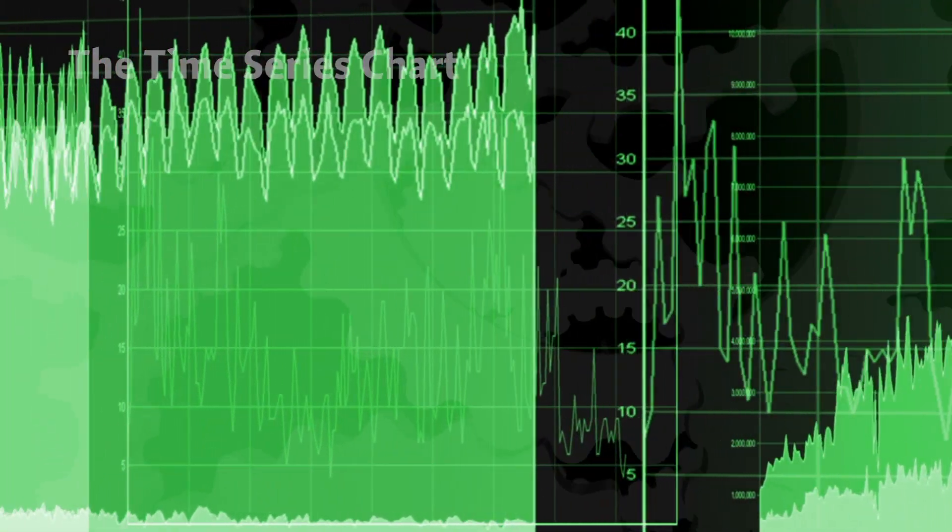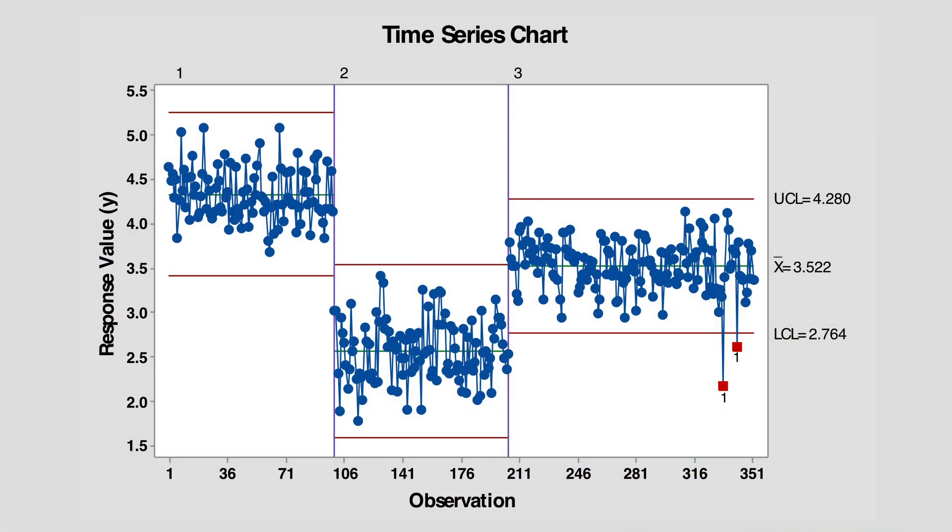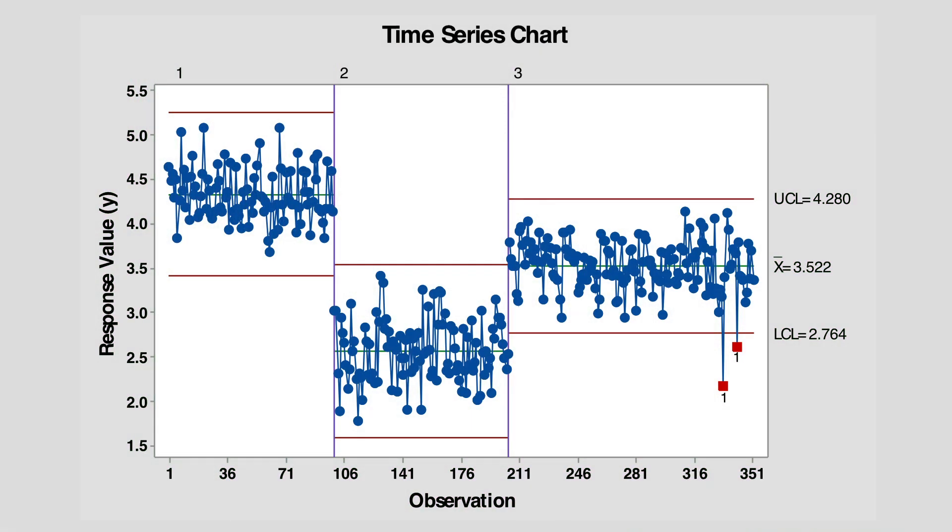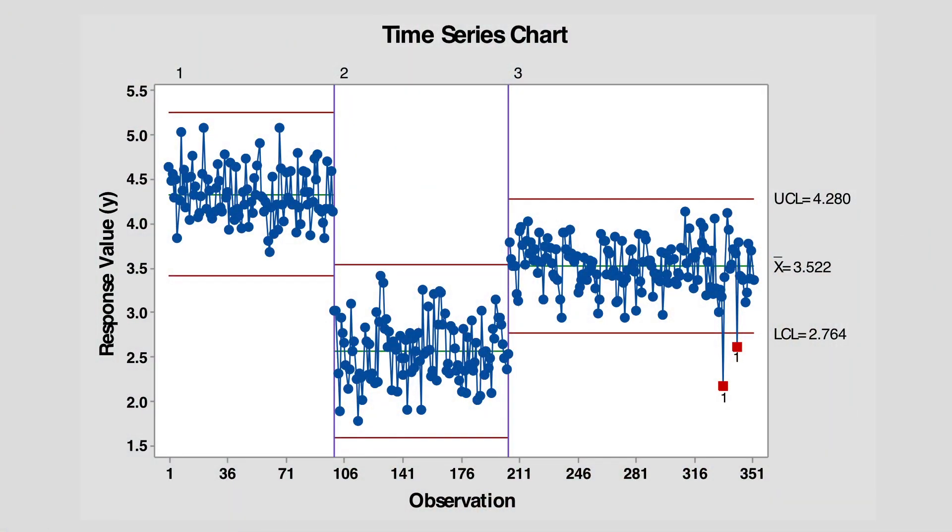I've got what we call a time series chart and these are really useful if you want to see how things are changing over time. You might use this in a manufacturing environment to say we changed something in our manufacturing process. Are we seeing a reflection in the change in properties of the product that we're producing, and does it still meet the requirements that we've outlined for it?